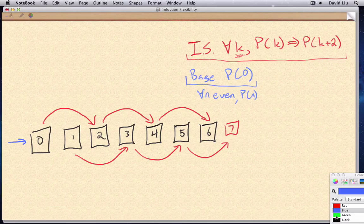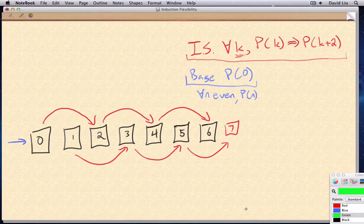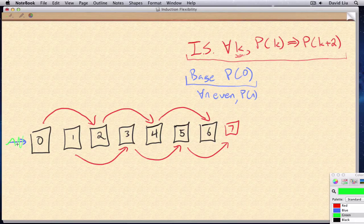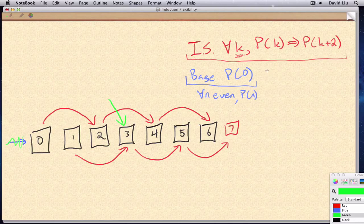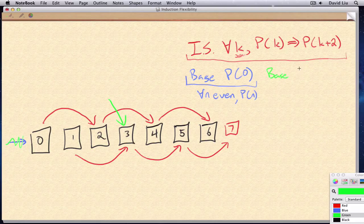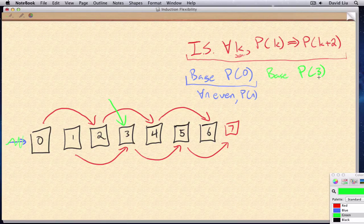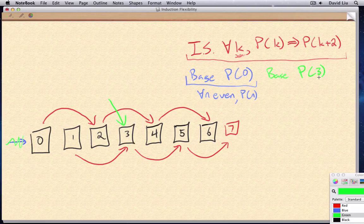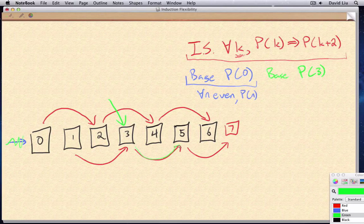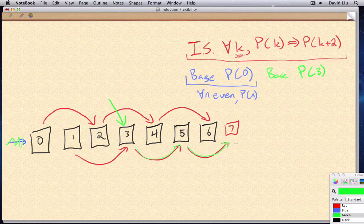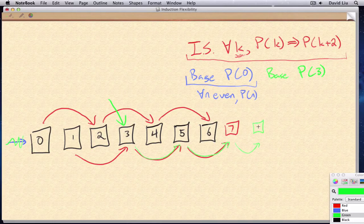On the other hand, suppose that we didn't push down zero. Instead, suppose we push down three to start with. That is, suppose our base was actually p of three. Then what would happen? Well, we'd push down three, and then five, and then seven, and then nine. We'd hit all odd numbers after three.